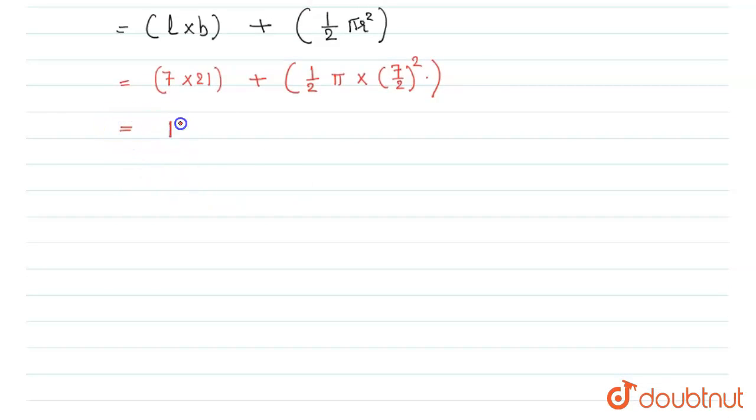So that is equal to 147 plus 19.25. Here we have put pi is equal to 22 divided by 7. So this is our area.